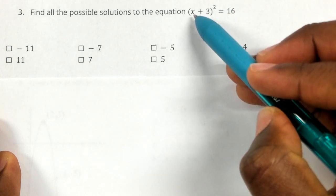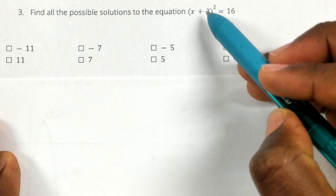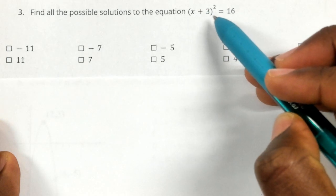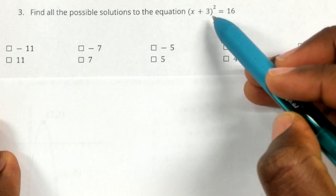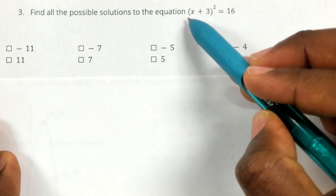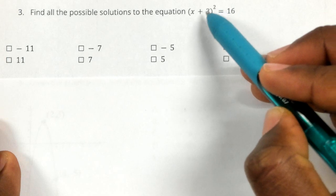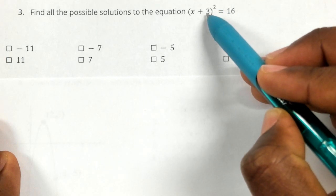So to find X, I need to get X all by itself. A lot of times you might think you need to subtract three first, but I can't subtract three until I get rid of this squared. This squared is trapping my X plus three, so I need to get rid of the squared first before I can get rid of the three.